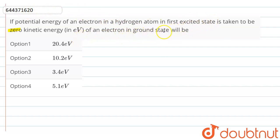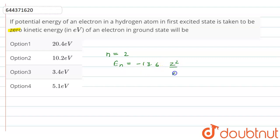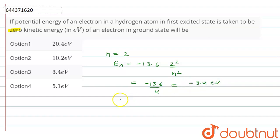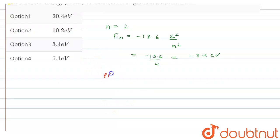The first excited state is n = 2. Let's find the total energy, which is E_n = -13.6 Z²/n². For the hydrogen atom, Z = 1, and for the first excited state n = 2, so we get -13.6/4, which equals -3.4 electron volts.